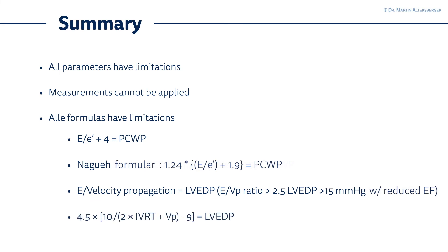There's another measurement where you can include the velocity propagation and the IVRT. It's 4.5 × [10/(2 × IVRT + velocity propagation) - 9] = LVEDP. Please see all the brackets as they are written in the formula. But also in this formula you see there are many variables, and especially the IVRT and the velocity propagation I consider very hard measurements. Simply be aware that all these formulas have several limitations and pitfalls.